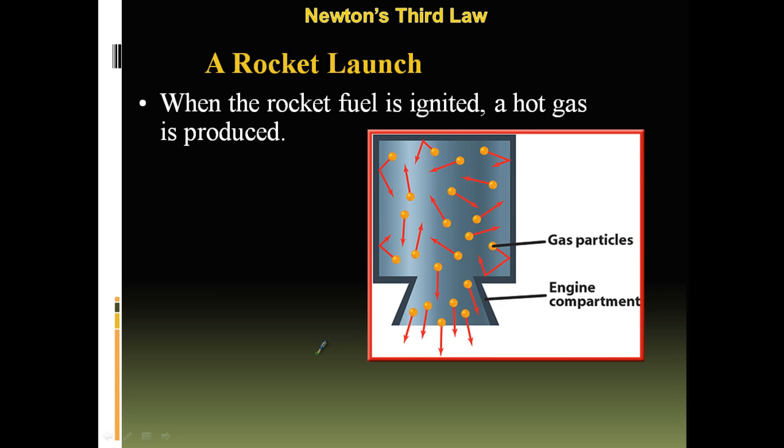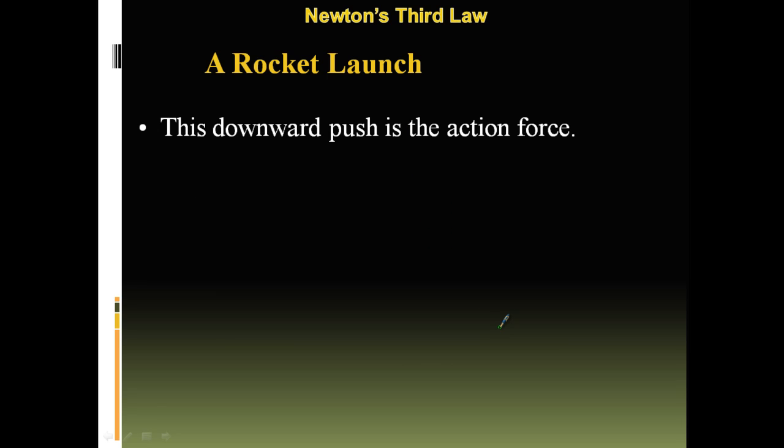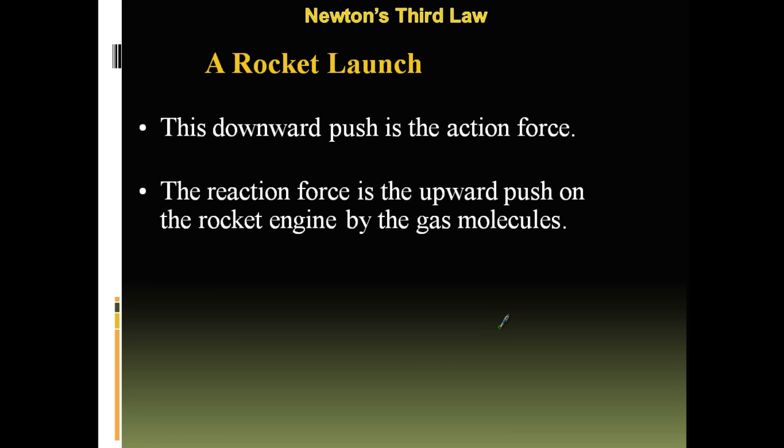When the rocket fuel is ignited, a hot gas is produced. As the gas molecules collide at the inside of the engine walls, the walls exert a force that pushes them out the bottom. All these gas molecules are bouncing around going crazy and then they get pushed out the back. This downward push is the action force. The reaction force is the upward push on the rocket engine by the gas molecules. This is the thrust that propels the rocket upwards. They're pushing down, the air is pushing back up on them, and they fly.